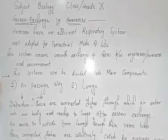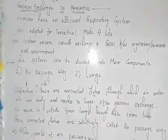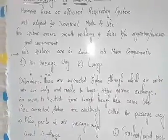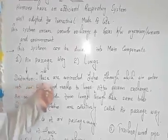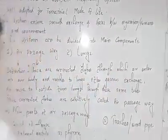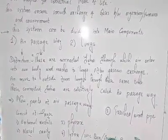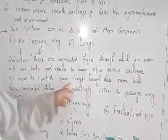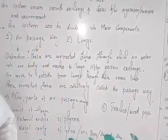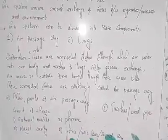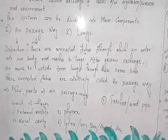This system can be divided into two main components: number one, air passageway, and number two, lungs. First of all, we should define air passageway. These are connected tubes through which air enters into our body and reaches the lungs. After gas exchange, air moves outside from the lungs through these same tubes. These connected tubes are collectively called the air passageway.